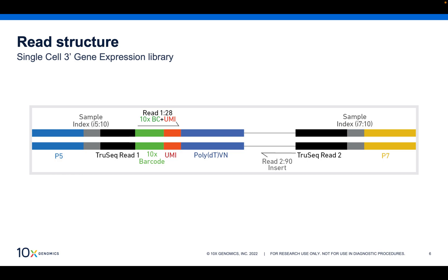As I mentioned earlier, during a single-cell RNA-seq experiment, we create a cDNA library. It has a read structure shown here. There are sequences that enable next-generation sequencing on an Illumina sequencer, as well as the barcode and UMI sequences that we just discussed. Importantly, sandwiched in the read structure is the insert sequence, which is used for genome alignment and ultimately gene expression quantification.